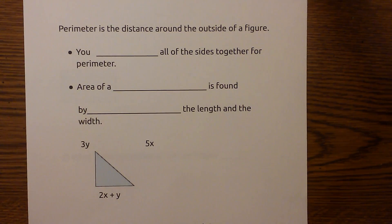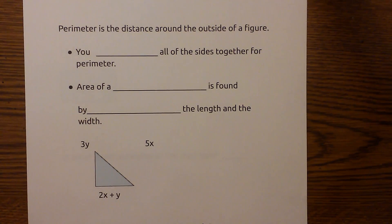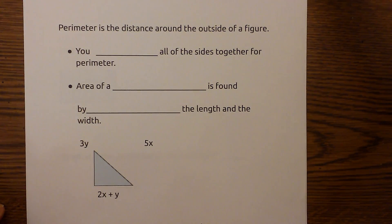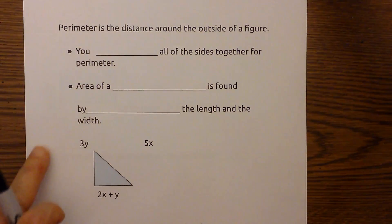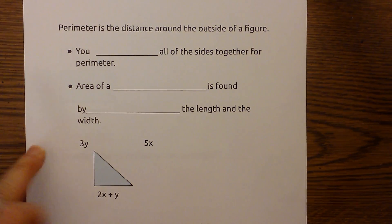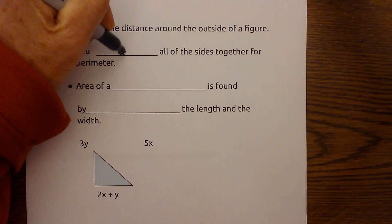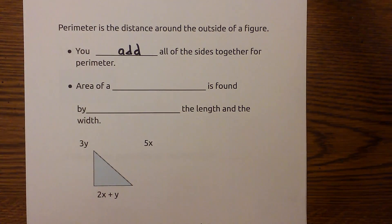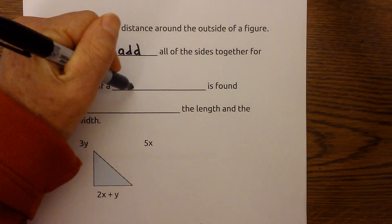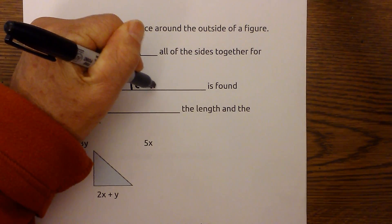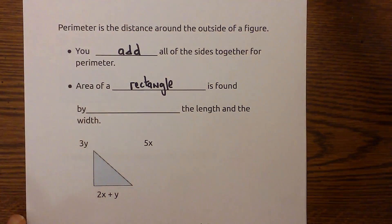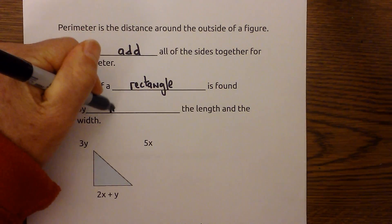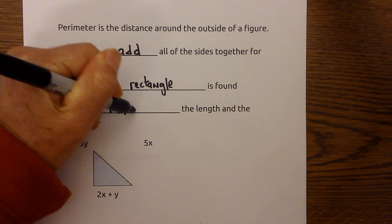Welcome to MooMooMath and Science, where we upload a new Math or Science video every day. In this video, I'd like to talk about calculating the perimeter and area of triangles and rectangles. The perimeter is the distance around the outside of the figure. You add all of the sides together. The area of a rectangle is found by multiplying the length and the width.